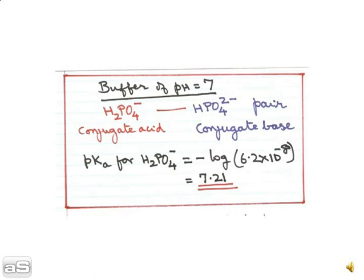So 7.21 is very close to 7. So by adjusting the concentration of the acid and the base we should be able to get the exact buffer of pH 7.